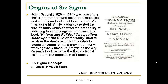Descriptive statistics has an origin in John Graunt. He was the very first demographer, and he developed statistical and census models that became used in today's demographics. He probably created the very first life table, which showed the probability of surviving to various ages. He had a book with both natural and political observations made upon the bills of mortality, in which he tried to analyze the death records of London to create an early warning system for when bubonic plague was starting to hit the city. Graunt's book really became the first statistical estimate of the population of London, and the Six Sigma concept we owe to John Graunt is descriptive statistics.